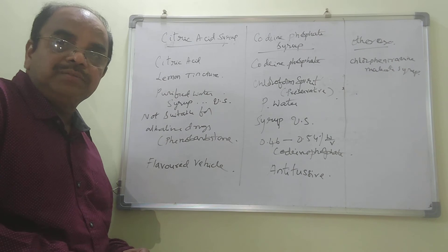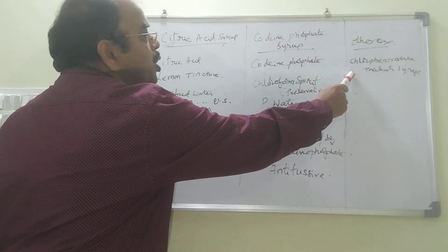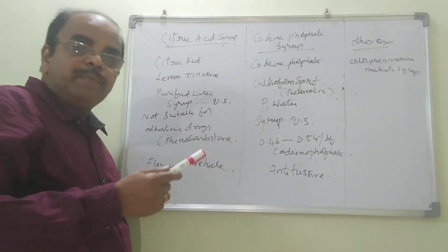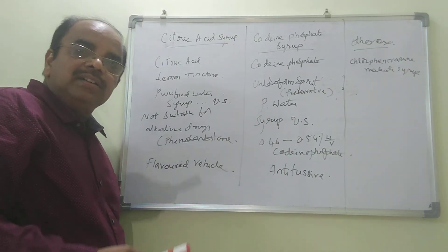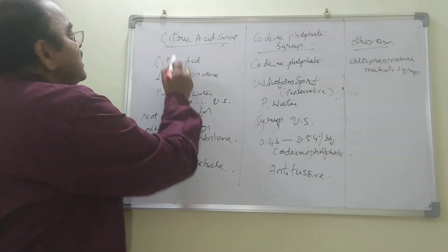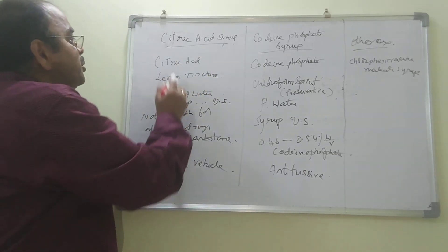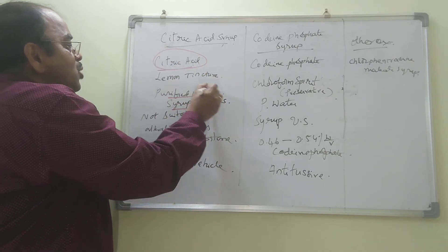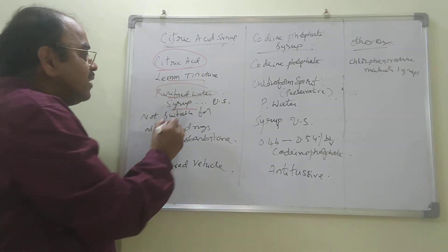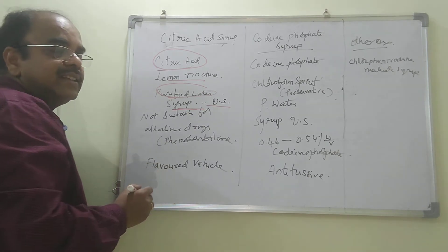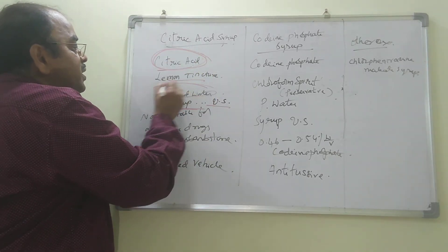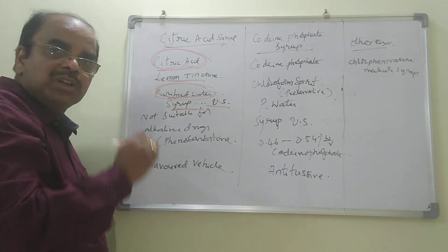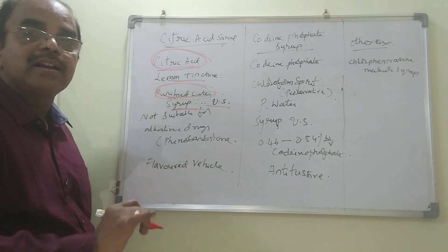A few more syrups: citric acid syrup, codeine phosphate syrup, and chlorphenamine maleate syrup. Citric acid syrup is a flavored vehicle. Codeine phosphate syrup is used in the treatment of cough. Chlorphenamine maleate syrup is used in the treatment of allergic and antihistaminic problems. To prepare citric acid syrup, use citric acid, lemon tincture, purified water, and syrup. Dissolve citric acid in purified water, add lemon tincture, and make up the volume with syrup. This is suitable for acidic drugs only, not suitable for alkaline drugs like phenobarbital.